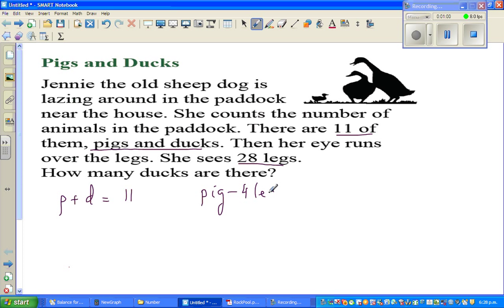It's always good to write the information that we have. And ducks have, or the duck has, how many legs? Of course two legs. So you can say the total of the legs is 28 and the total of animals is...